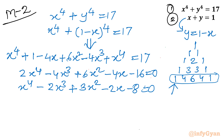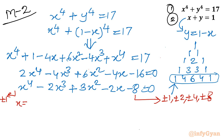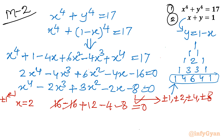Using the rational root theorem, the eligible factors of the constant term −8 are ±1, ±2, ±4, ±8, and the leading coefficient is ±1. Testing x = 2: 16 − 16 + 12 − 4 − 8 = 0. So x = 2 is a root.